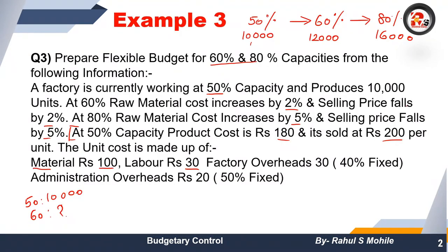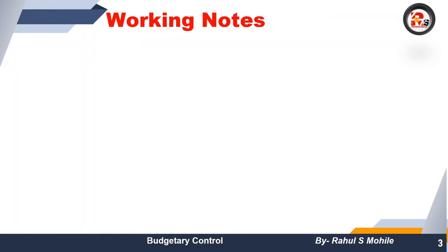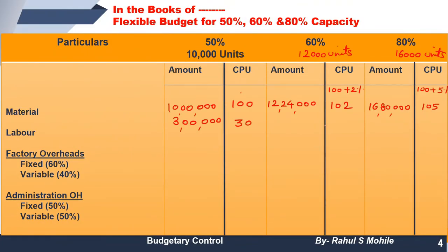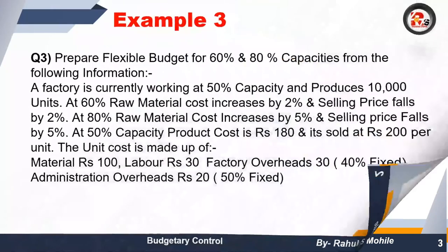For labor, there is no specific adjustment information given in the question, so we treat it as the same per unit cost of 30 rupees. For 60% capacity: 30 × 12,000 = 3,60,000. For 80% capacity: 30 × 16,000 = 4,80,000. Material and labor are done; next is factory overhead.